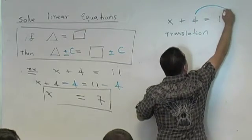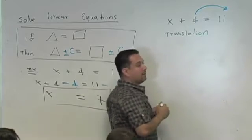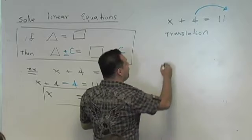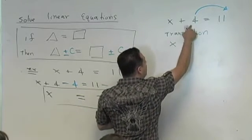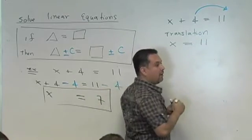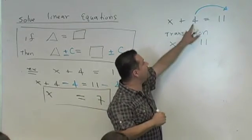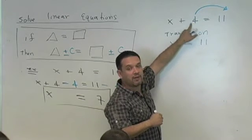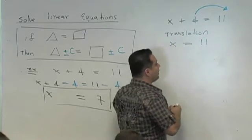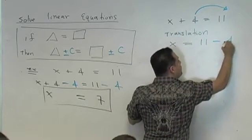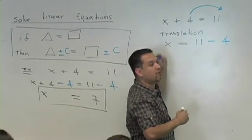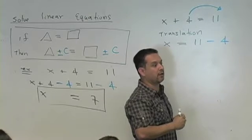You're gonna translate that 4. If you translate the 4, I'm only moving 4, so that means x is by itself. I didn't move 11, it is still there. The 4 on the left is positive. When you translate it, it's now what? When you move a term to the other side, when you translate, you change its sign.